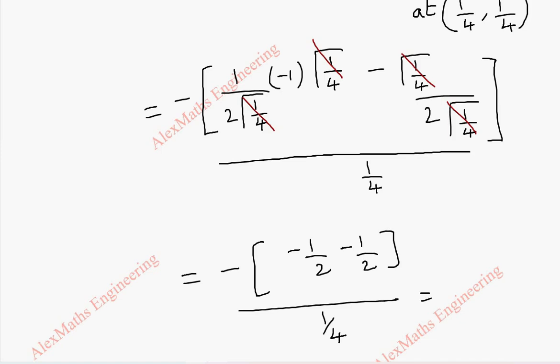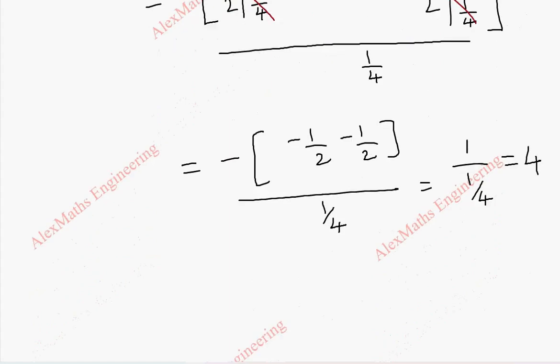Minus 1 by 2 minus 1 by 2 is minus 1. There is a minus outside so plus 1 by 1 by 4. So, this 4 will be taken to the numerator. So, d square y by dx square is 4.